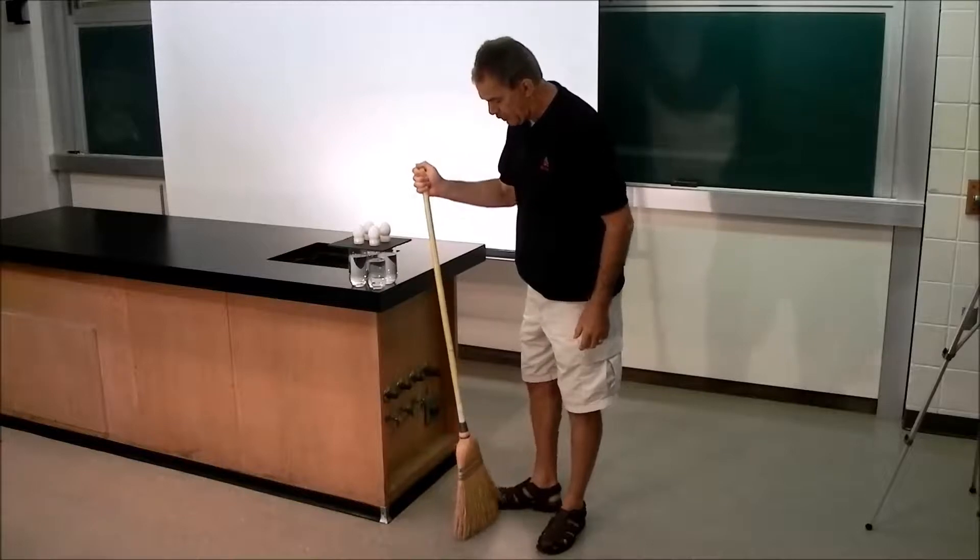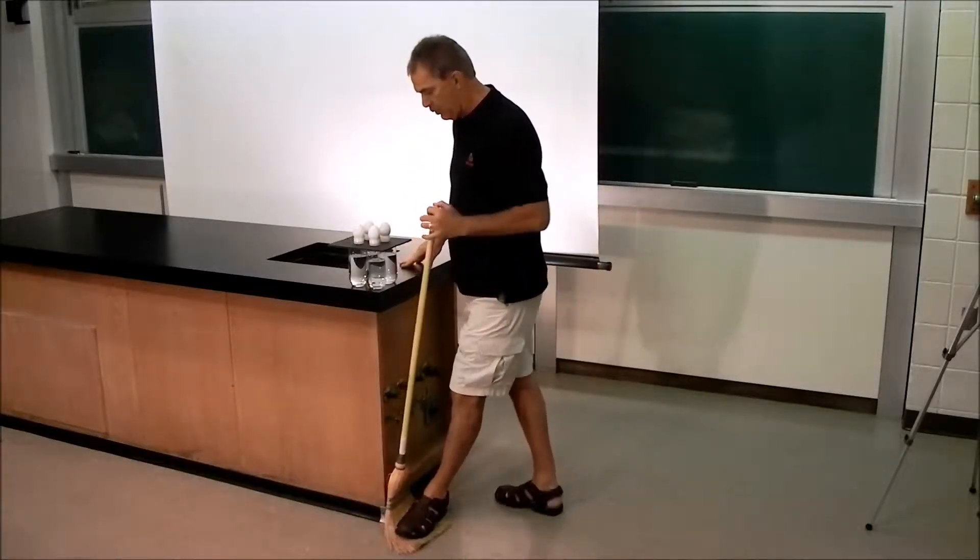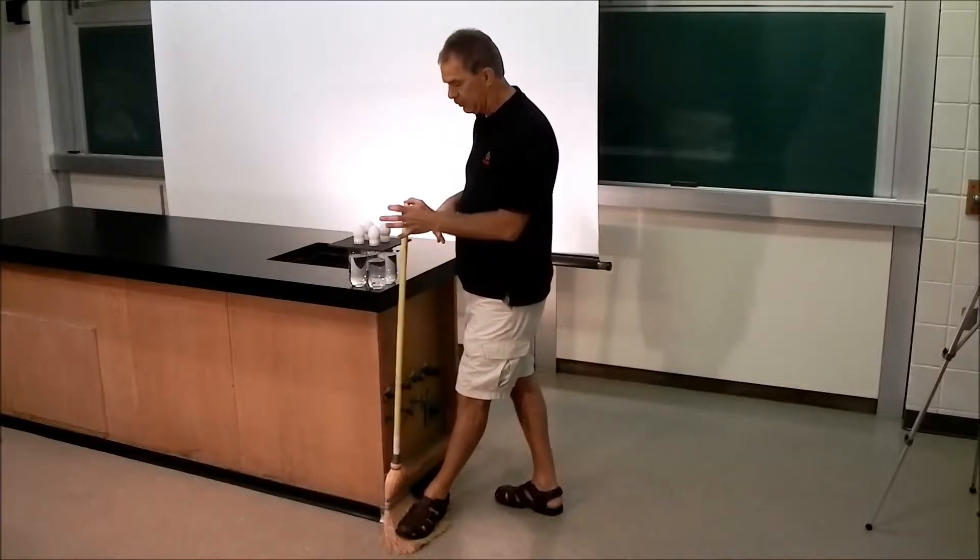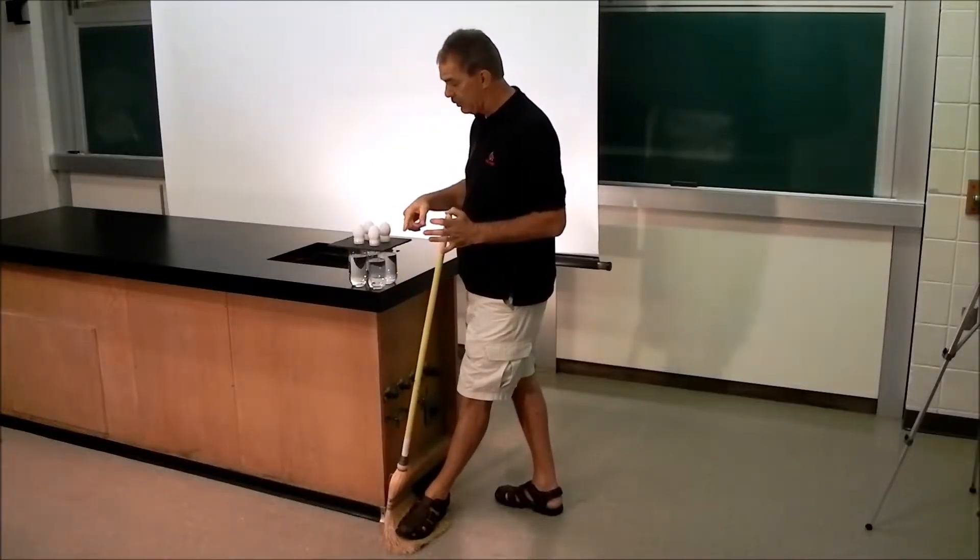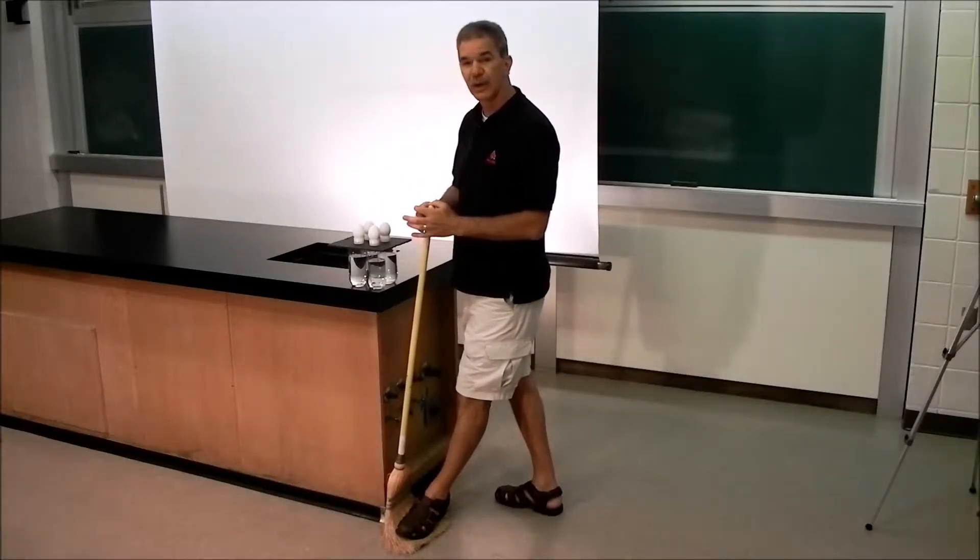By using the broom as my projectile mechanism, I will pull the broom back. When released, it will strike the foam board. The board slides out from under the eggs and the eggs fall into the cups.